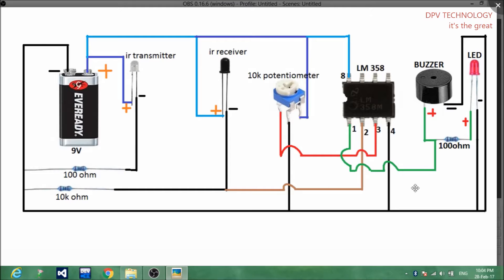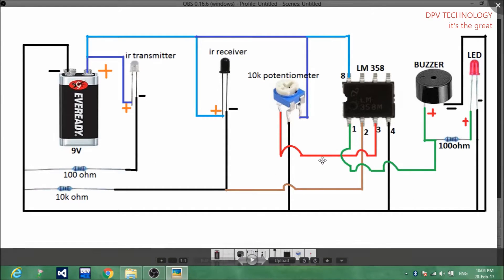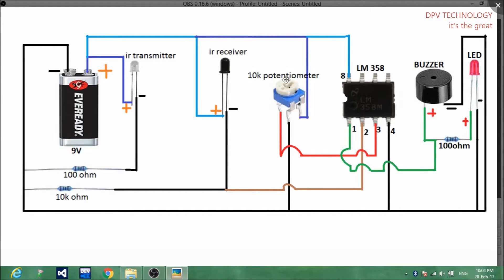One important thing is that after connecting all these components, you have to adjust this potentiometer. You have to first bring something in between these two IR transmitter and receiver, and you have to adjust this so that after some time...